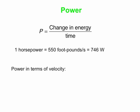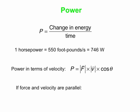We can also define power in terms of velocity. Power is the magnitude of the force multiplied by the magnitude of the velocity, multiplied by the cosine of the angle between the force and velocity vectors. In cases where force and velocity are parallel to each other, we can simplify the equation to power equals F times V.